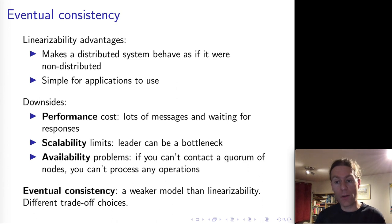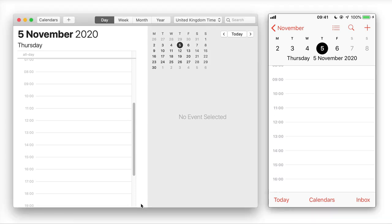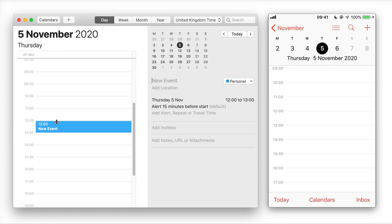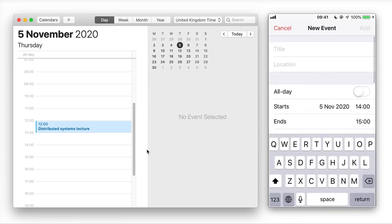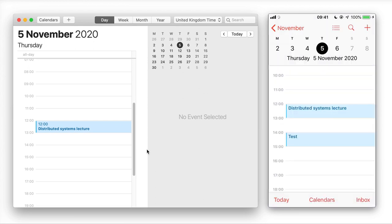The one we'll look at is called eventual consistency. As an example, let's consider a calendar app. Here I have on the left-hand side the calendar app running on my computer, and on the right-hand side the calendar app running on my phone. I can add an event on the left-hand side, say distributed systems, and this will sync within a couple of seconds over to the phone on the right-hand side. Similarly, I can add an event on the phone and this should sync over to the computer.